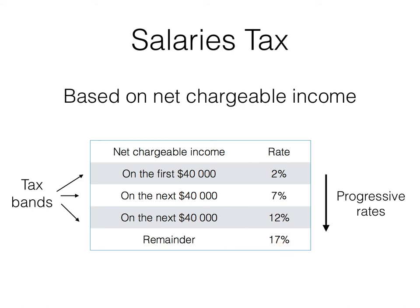As you can see, the tax rate increases progressively for each band — we call these the tax bands. Therefore, in conclusion, if you earn less then you pay less tax, and if you earn more then you need to pay more.